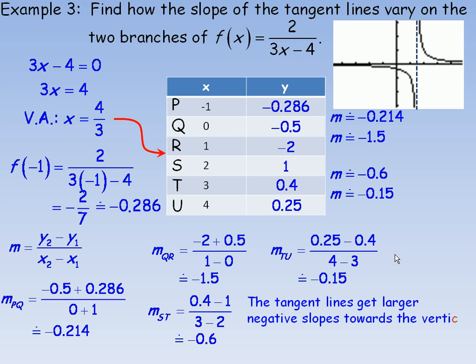And so we say, the tangent lines get larger negative slopes, they're steeper, towards the vertical asymptote to the left. So as you approach this side, the tangent lines are negatively sloped and they get steeper. And the same thing happens as you approach from the right side. Now, what that looks like in the graph is this.